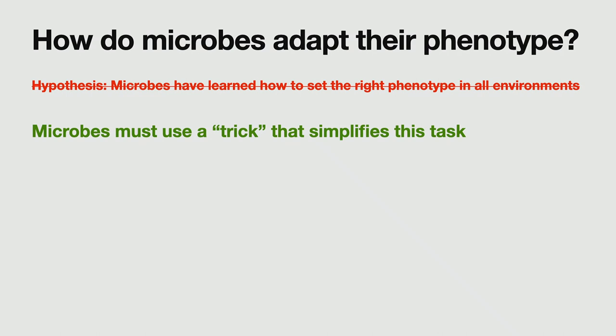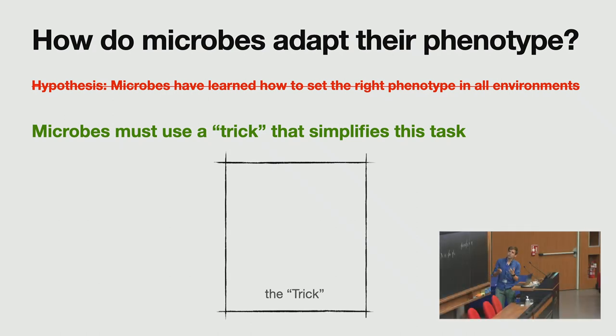So I propose a different hypothesis, or well, an open hypothesis. I just say microbes must use some trick that makes this phenotype search easier. And my talk is about giving you a trick that I think is convincing. So this frame hopefully will be filled at the end of the talk.